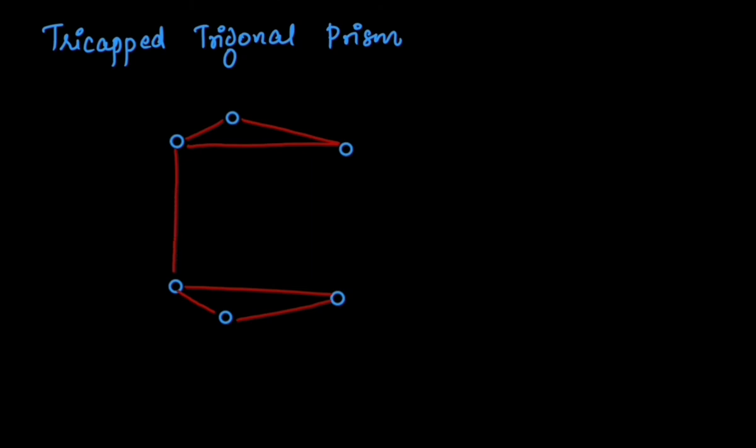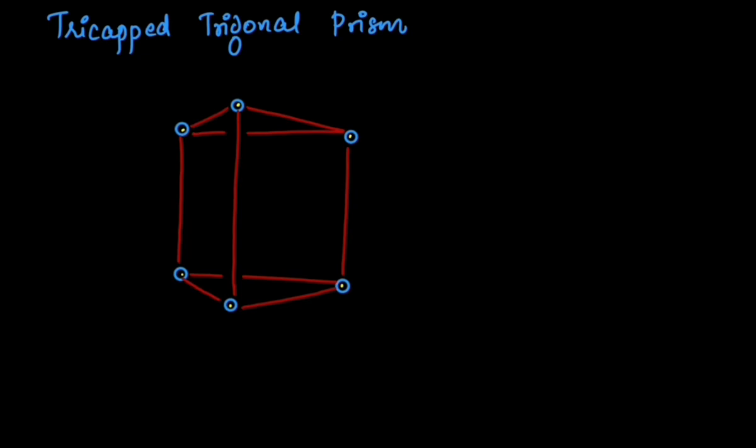Now let's join the top vertices to the bottom vertices. Since they are not staggered, that would not generate more number of triangular faces. It is not a trigonal antiprism. It is simply a trigonal prism.